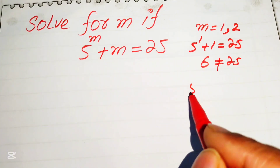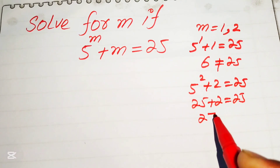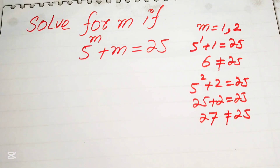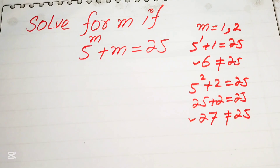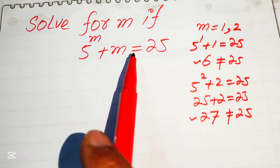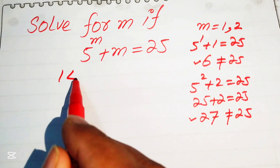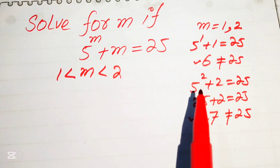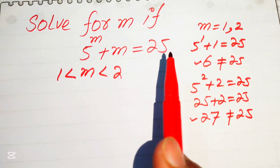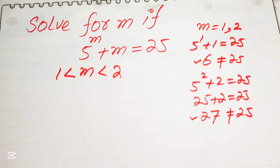When we put m equals 2, we get 5 squared plus 2 equals 25, so 25 plus 2 gives 27, which is also not equal to 25. So when m=1, the left-hand side becomes 6, and when m=2, it becomes 27. Since 6 is less than 25 but 27 is greater than 25, the value of m lies between 1 and 2.